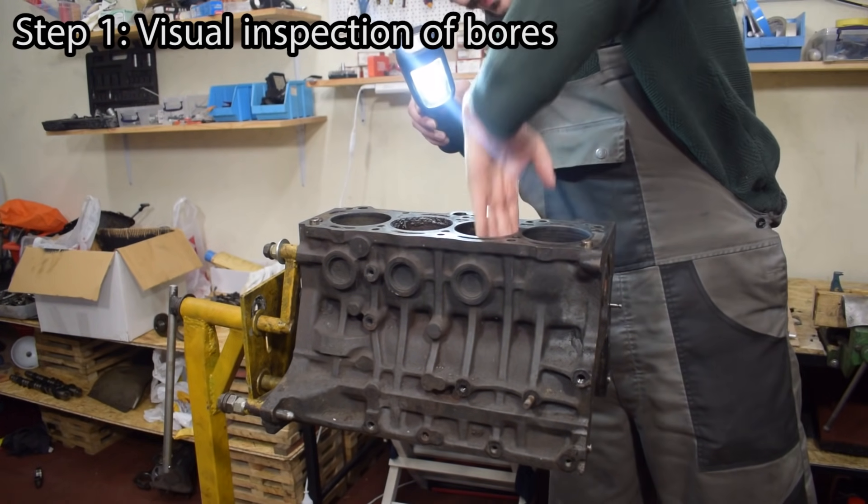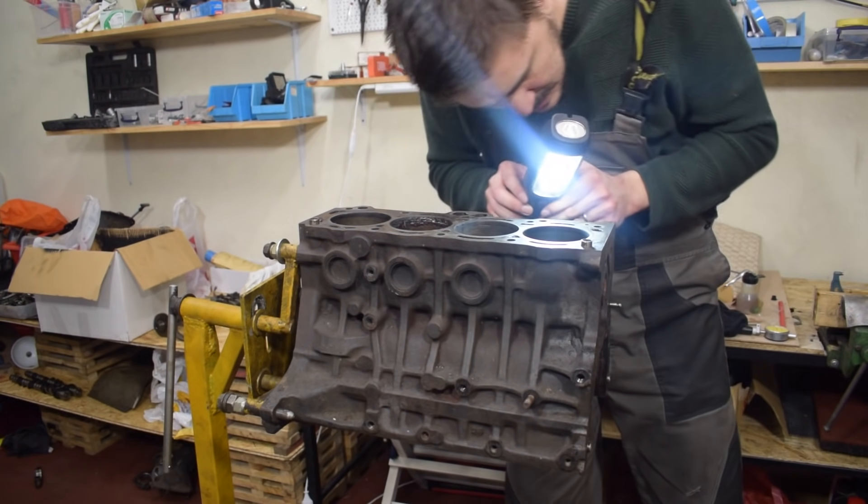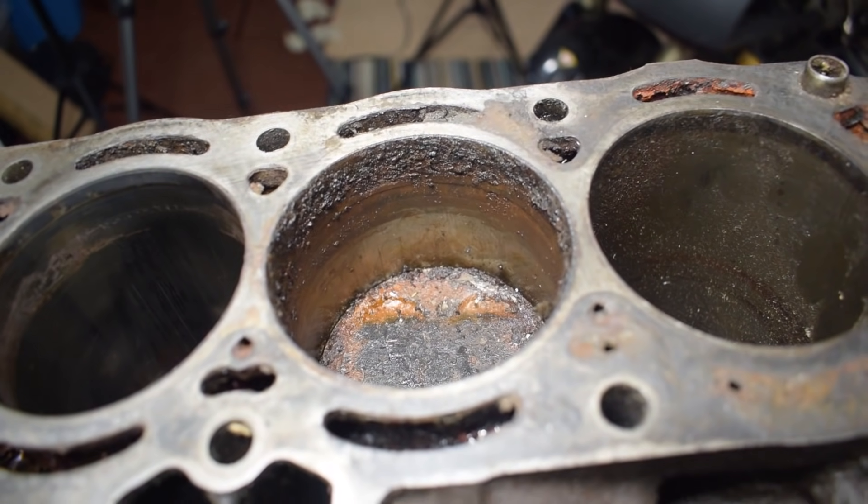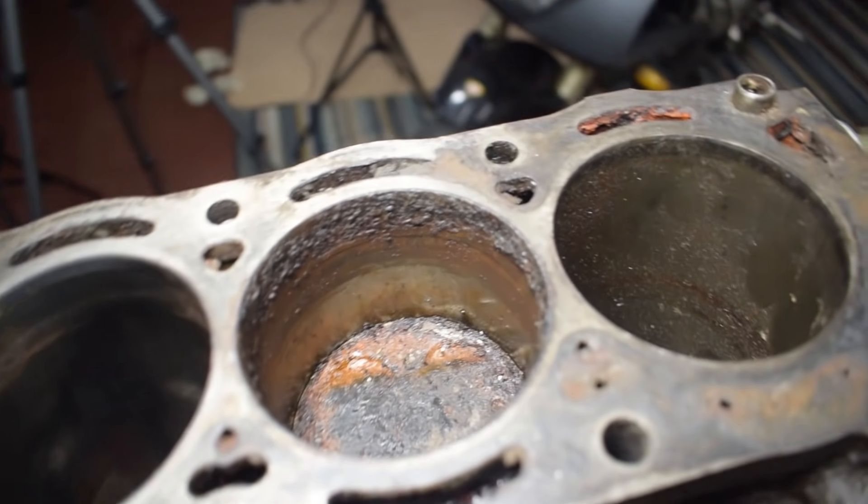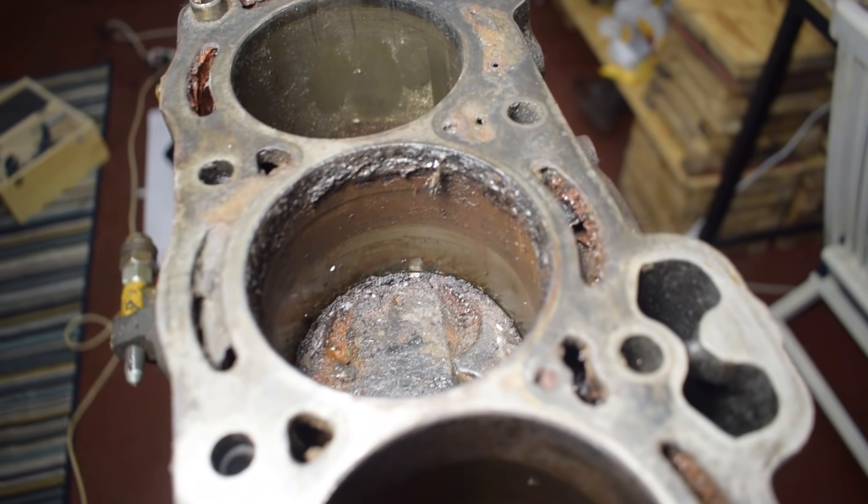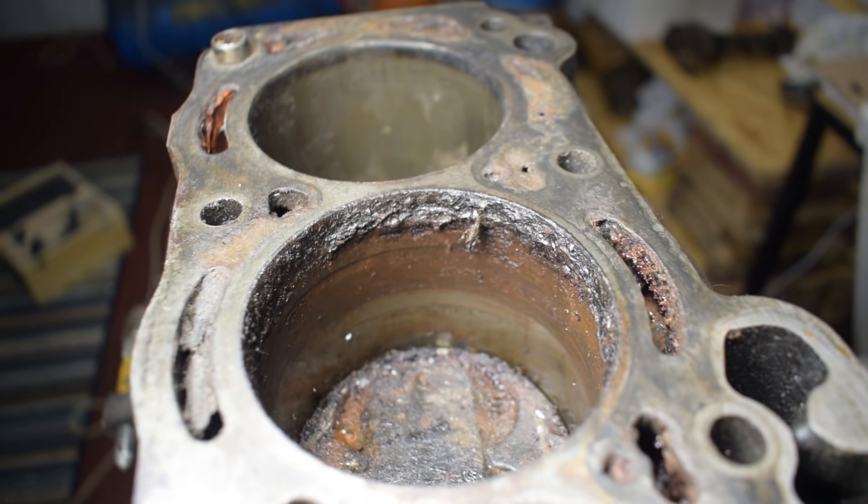If there's an obvious presence of damage your bores have failed visual inspection and they will need reboring. This is just a junk block I'm using for demonstration purposes and as you can see it immediately fails visual inspection. This block had water and or coolant ingress into the cylinder and was sitting for a very long time which resulted in cylinder number three being completely rusted. If I were to rebuild this engine I would definitely have this block rebored.